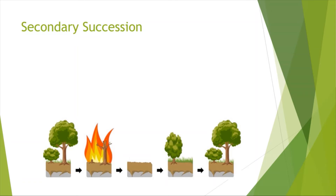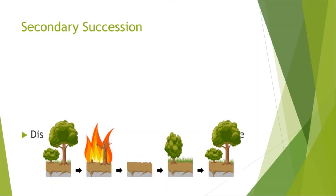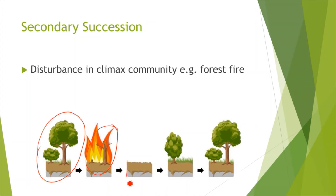We can also have secondary succession. This is basically when there might be a disturbance in the climax community — for example, a forest fire. Looking at the picture, we have a climax community reached, but then there was a forest fire and we have just bare soil with no species of trees or plants or animals living there. What makes it different to primary succession is that the soil still remains.